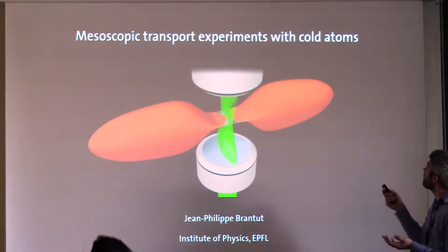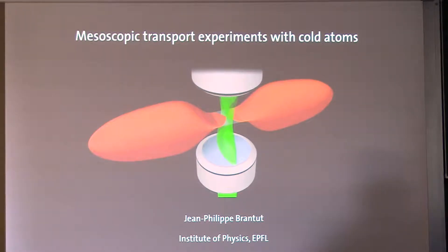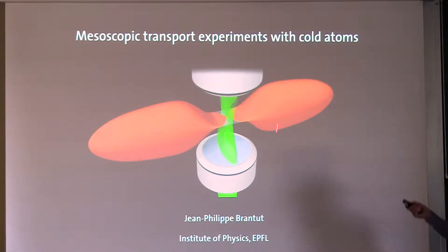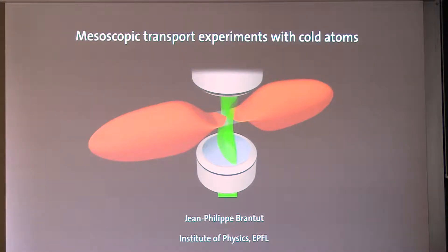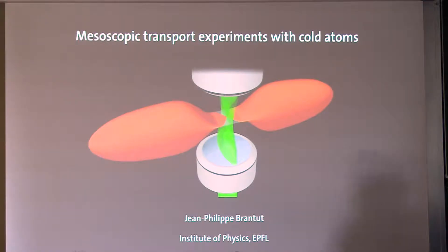The hope is that because cold atoms operate at very different energy scales and very different length scales, we might be able to have different tuning knobs and hopefully learn a few things about transport processes. What you see at the back here is the simplest device we could think of — a quantum point contact imprinted on a cold atomic cloud. Before I describe that in detail, let me motivate the general idea of why cold atoms might be an interesting tool to investigate quantum matter-related phenomena.